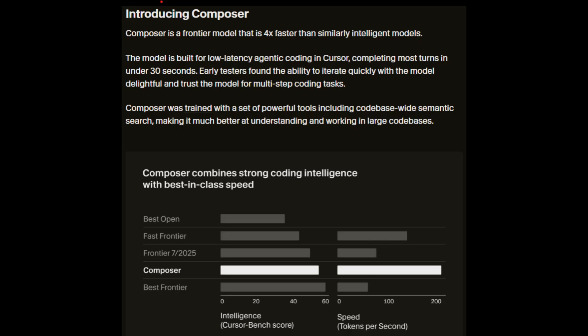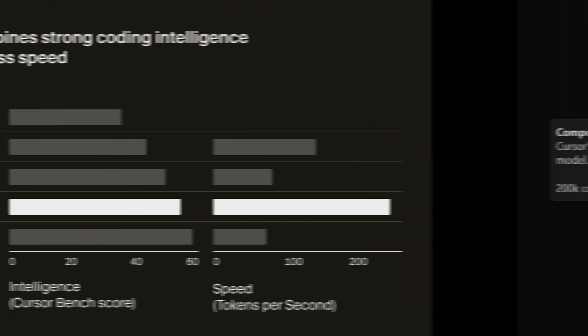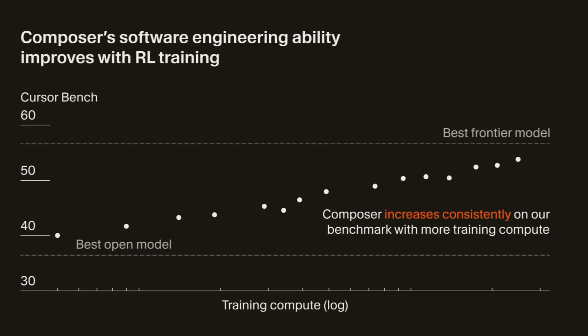First up: Composer. This is Cursor's own in-house AI model, built from the ground up for coding. It's 4x faster than similarly intelligent models. Composer is trained to understand your entire codebase — it remembers conventions, respects your patterns, and it almost never hallucinates its imports. Composer is described as a mixture-of-experts language model that supports long-term context generation and understanding, built with agents and general software engineering workflows in mind using reinforcement learning.